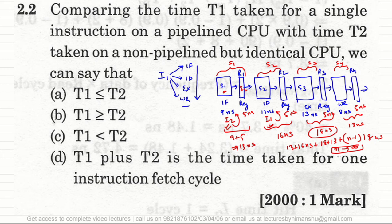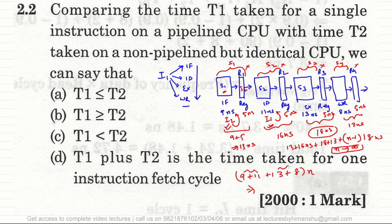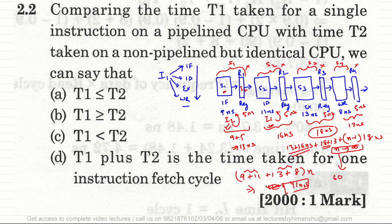Without pipelining, no registers are needed and instruction i1 takes 9+11+13+8 = 41 nanoseconds to execute, and n instructions take 41×n nanoseconds. With pipelining, the first instruction takes approximately 13+16+18+13 ≈ 60 nanoseconds, plus 18 nanoseconds for each of the remaining n-1 instructions. For large n, pipelining saves significant time.